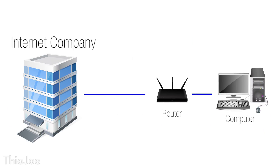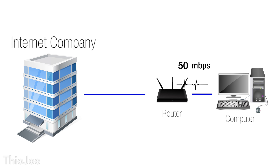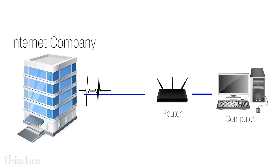When the internet company sends the signal to your house to connect to the internet, they are required to give you the speed that you pay for. However, they know that over the long distance between their internet hub and you, there will be lots of signal degradation. So for example, if they want to provide someone with a 100 megabit connection, they actually have to initiate the connection with a much higher signal strength, or else by the time it got to you, it would be much slower.